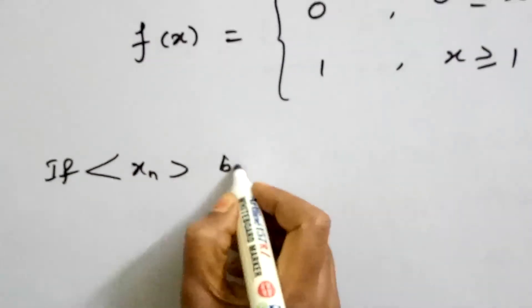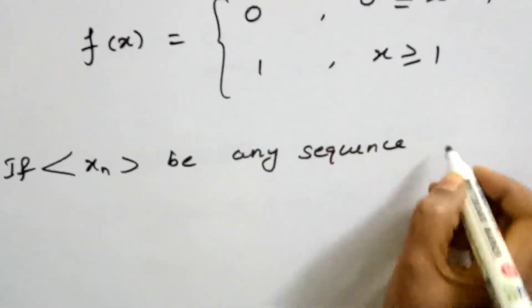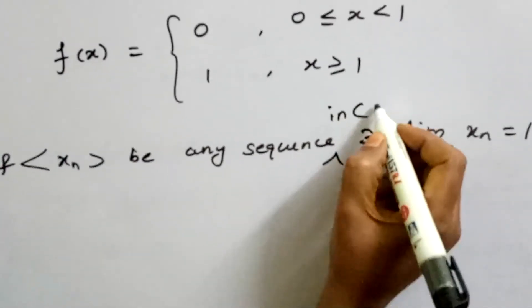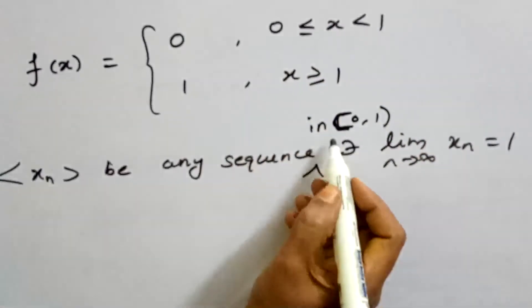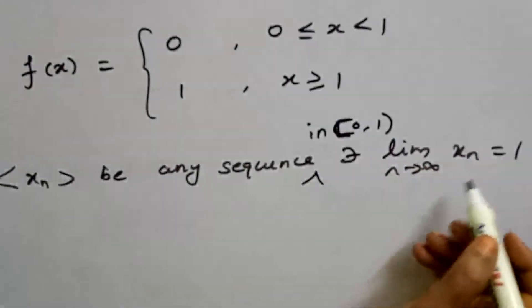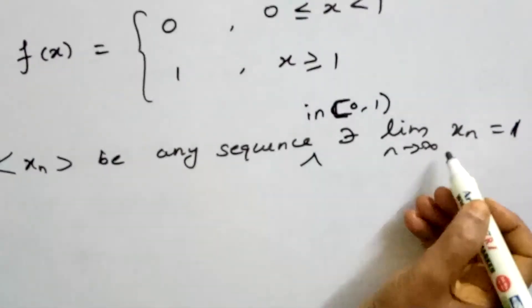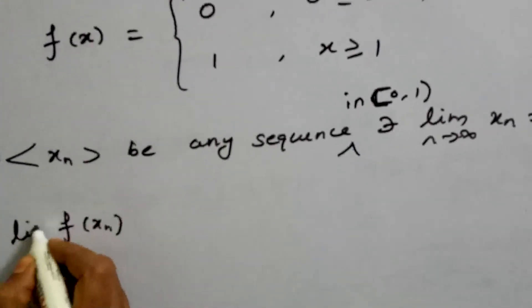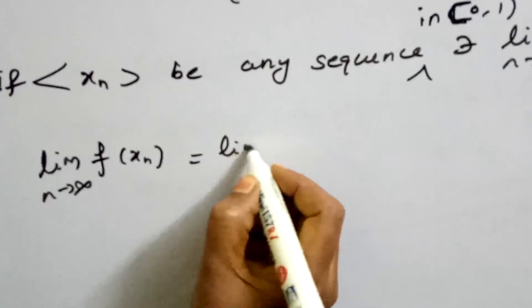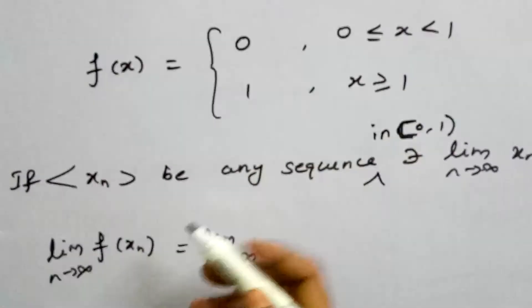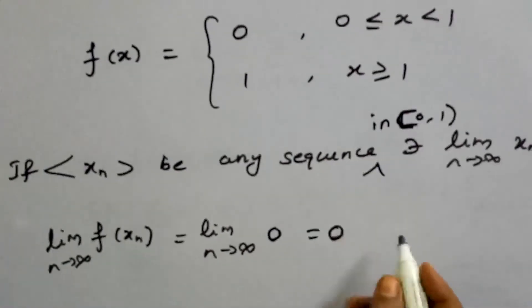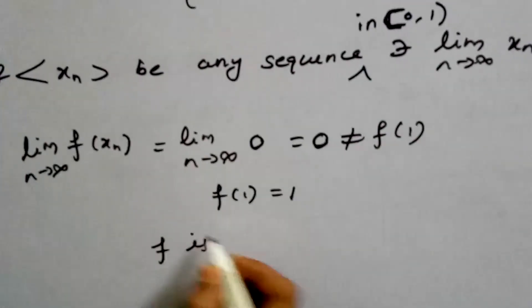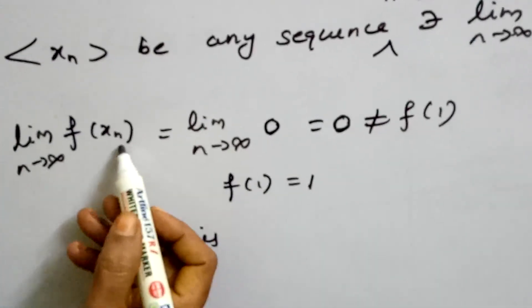Let xₙ be any sequence such that lim(n→∞) xₙ = 1, where xₙ is in the half-closed interval [0,1). We can choose such a sequence. Then f(xₙ) = 0 for all n, since xₙ < 1. But f(1) = 1. Therefore lim f(xₙ) = 0 ≠ 1 = f(1). Therefore f is not continuous at x = 1.